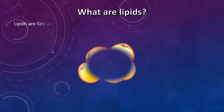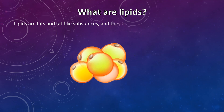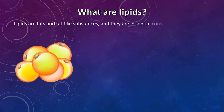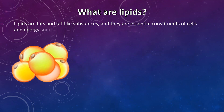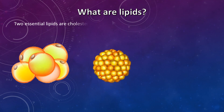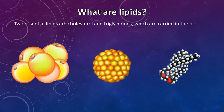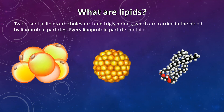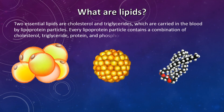What are lipids? Lipids are fats and fat-soluble substances and they are essential constituents of cells and energy sources. Two essential lipids are cholesterol and triglycerides, which are carried into the blood by lipoprotein particles. Every lipoprotein particle contains a combination of cholesterol, triglyceride, protein, and phospholipid molecules.